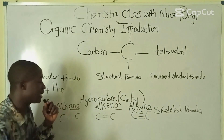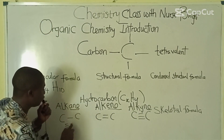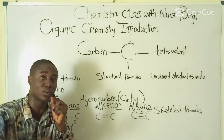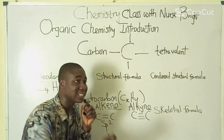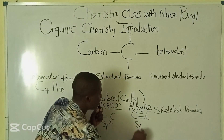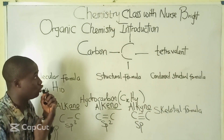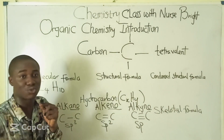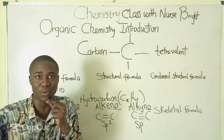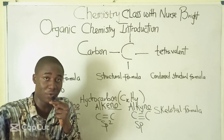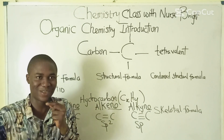It must be noted that alkanes, when it comes to hybridization, are sp3 hybridized. Alkenes, when it comes to hybridization, are sp2 hybridized. All this must be noted about the introductory aspect of organic chemistry. There is still more to learn, so do hit the subscribe button and share these videos with your friends. Thank you very much and God bless you.